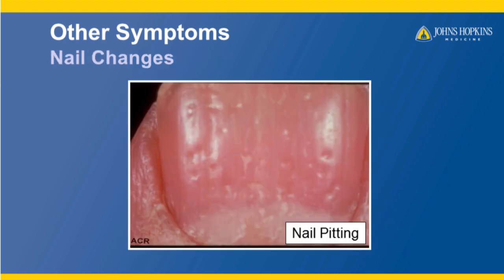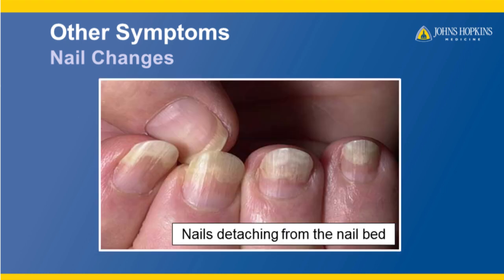Another common symptom of psoriatic arthritis are nail changes. You can clearly see pitting throughout this fingernail. Another nail type change is nails can detach from the nail beds, as seen in this photo.